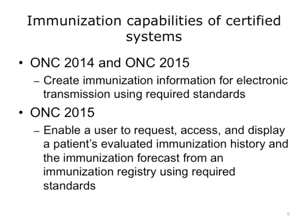Meaningful Use Stage 2 and Modified Stage 2 require the use of ONC-2014 certified systems. Meaningful Use Stage 3, as well as other programs such as the Merit Incentive Payment System, or MIPS, requires ONC-2015 certified systems. Both include the capability for immunizations to be recorded on EHRs and then transmitted to a public health authority. ONC-2015 adds a new capability — it enables a user to request, access, and display a patient's evaluated immunization history and the immunization forecast from an immunization registry using required standards.